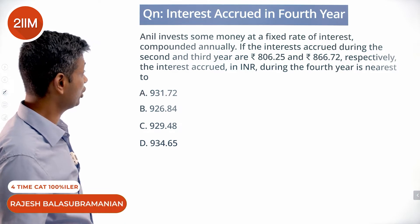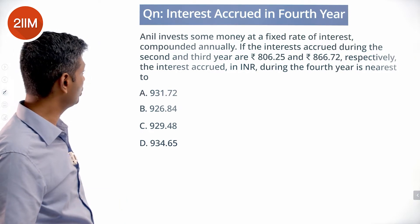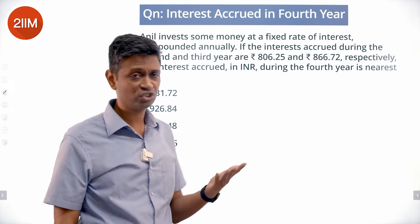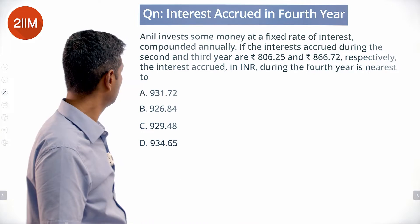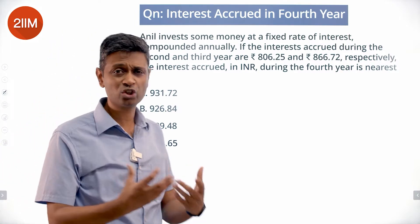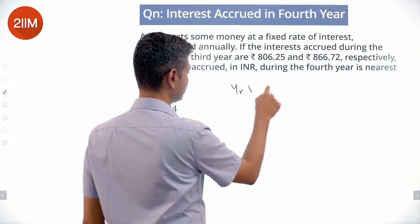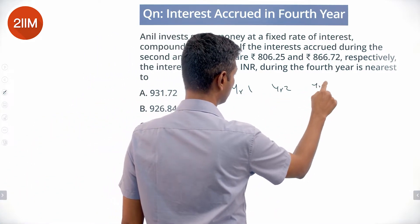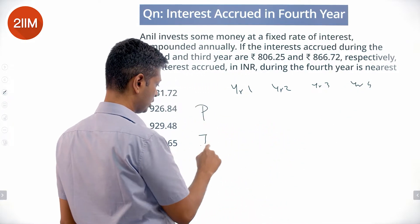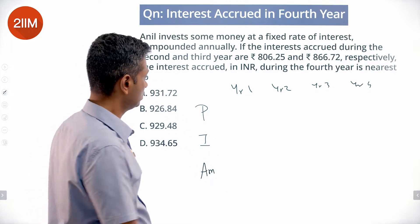I will invest some money at a fixed rate of interest compounded annually. If the interest accrued during the second and third years are 806.25 and 866.72 respectively, the interest accrued in INR during the fourth year is nearest to — very nice juicy question. Let's set up a table: year one, year two, year three, year four — principal and interest amount.